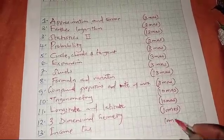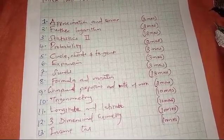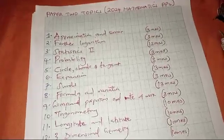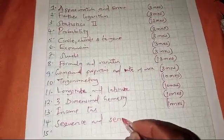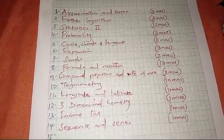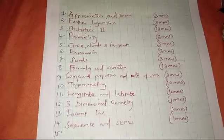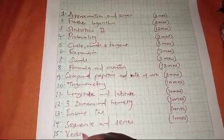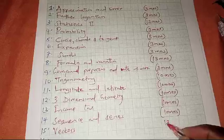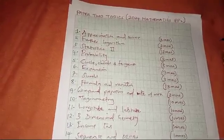Then we have income tax, worth 10 marks. The next one is sequence and series, also carrying 10 marks. And we have a question from vectors, which will carry a total of 13 marks.